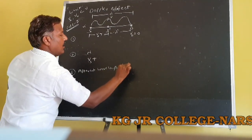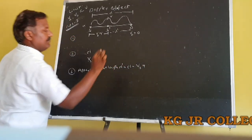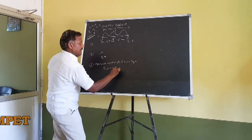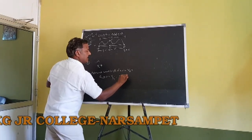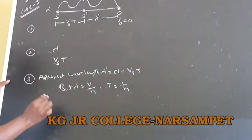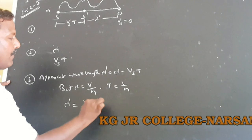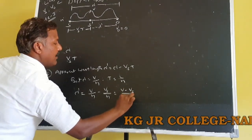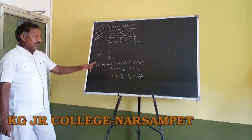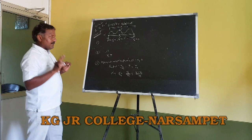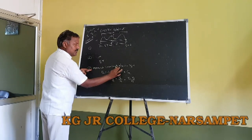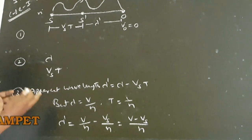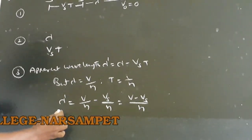Lambda dash equals lambda minus Vs × T. We know that lambda equals V/N and time period T equals 1/N. Substituting both values: lambda dash equals V/N minus Vs/N, which simplifies to lambda dash equals (V minus Vs)/N. This is the apparent change in wavelength.